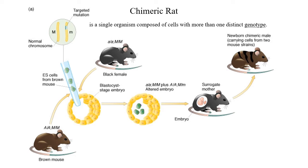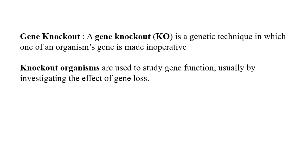Chimeric means two characters can be seen in a single animal. Gene knockout refers to the fact that each character is controlled by two sets of genes. To find out the specific functionality of a gene, we intentionally make a particular gene inoperative and observe the gene's actual function in tumorigenesis. Gene knockout is a genetic technique in which one of an organism's genes is made inoperative; knockout organisms are used to study gene function by investigating the effect of gene loss.